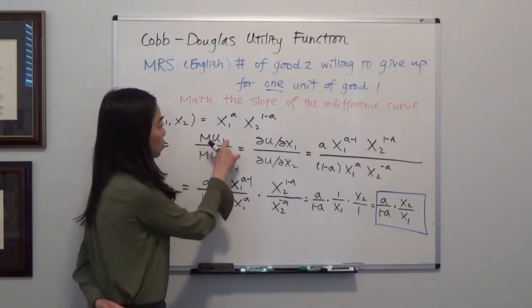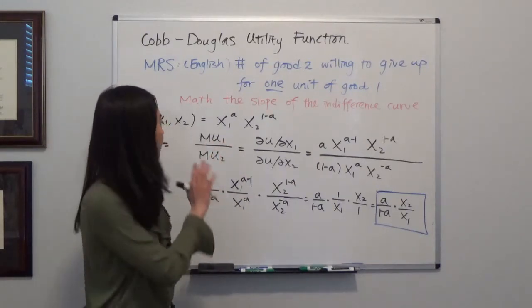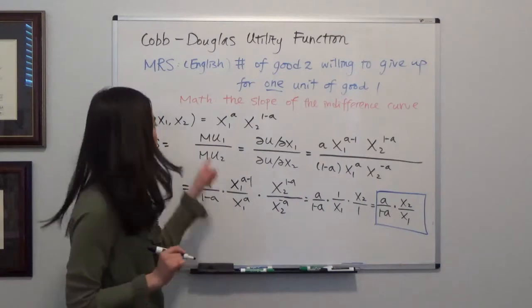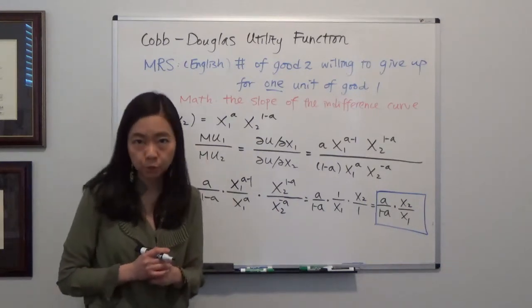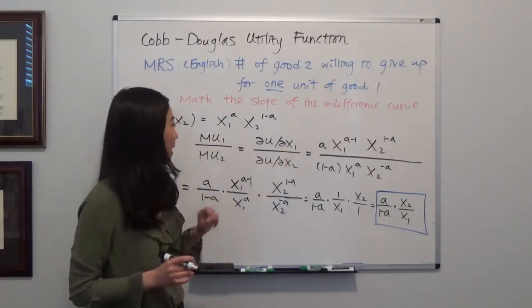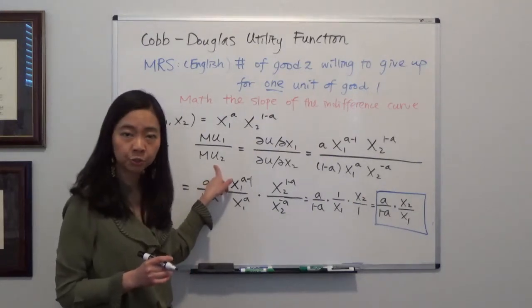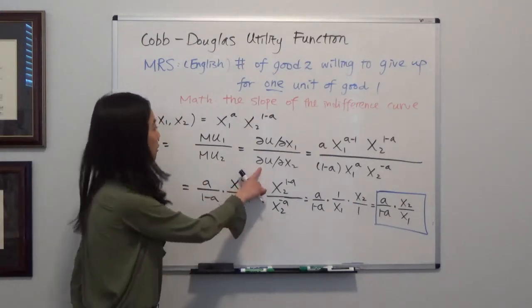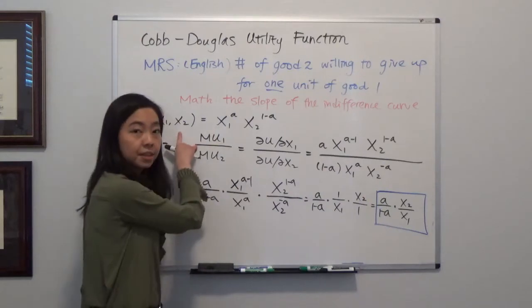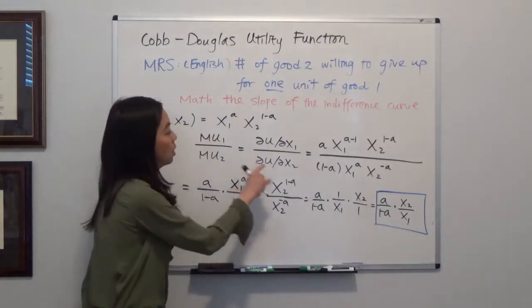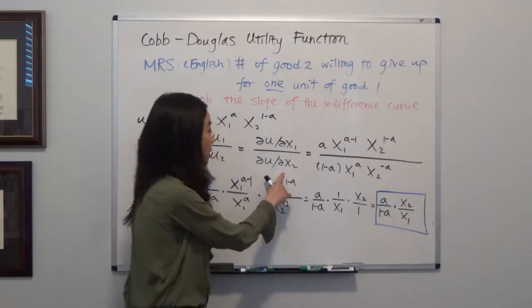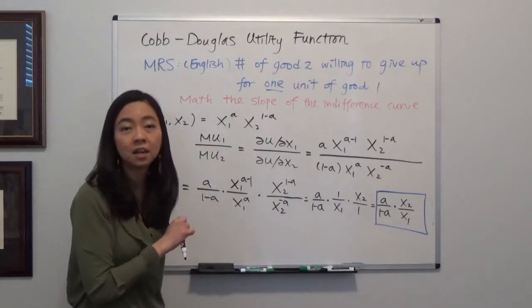So marginal utility of good one really is the partial derivative of our utility function with respect to x1. And downstairs we have marginal utility of good two. That's very similar. You take the partial derivative of your utility function with respect to x2. Then you'll be able to find the marginal utility of good two.